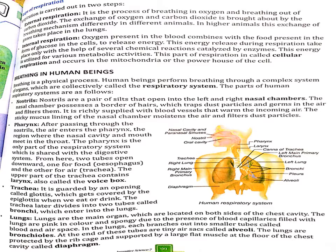Nostrils are a pair of openings left and right in your nasal chambers. The air enters through the nostrils. The nasal passage is richly supplied with blood vessels which warm the incoming air. Next is the pharynx — after passing through the nostrils, air enters the pharynx.